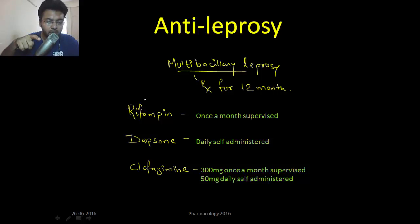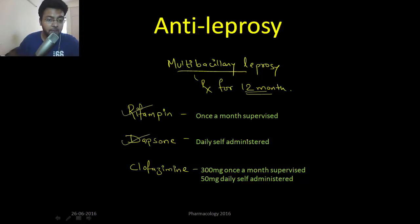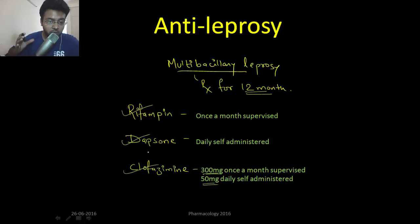For leprosy treatment, there are two forms: multi-bacillary and paucibacillary. Paucibacillary leprosy is treated for six months; multi-bacillary for twelve months. In multi-bacillary treatment, rifampicin is given once a month under supervision, dapsone is taken daily by the patient, and clofazimine 300 mg is given under supervision while 50 mg is taken daily by the patient. So rifampicin and clofazimine are given once a month under supervision.